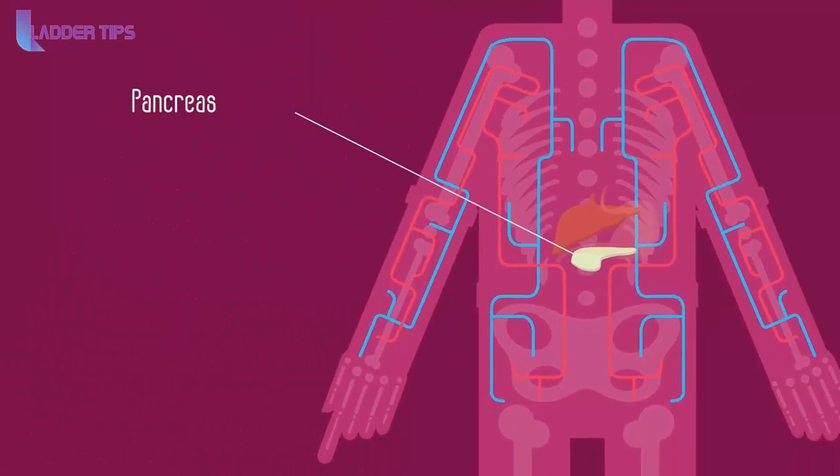So to review, insulin and glucagon are two hormones released by the pancreas which act on the liver to regulate our blood glucose level.